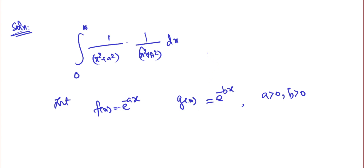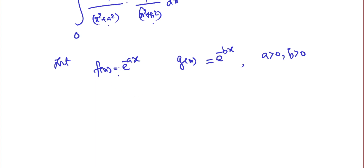The plan is: the Fourier cosine transform of f(x)·g(x) equals the Fourier cosine transform of f times the Fourier cosine transform of g. Since the Fourier cosine transform of e^(−ax) gives something like 1/(s² + a²) up to constants, I can solve this problem very easily. That is the key guess.